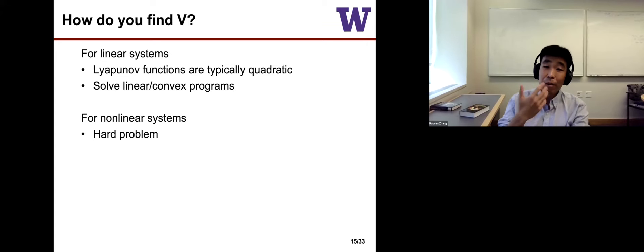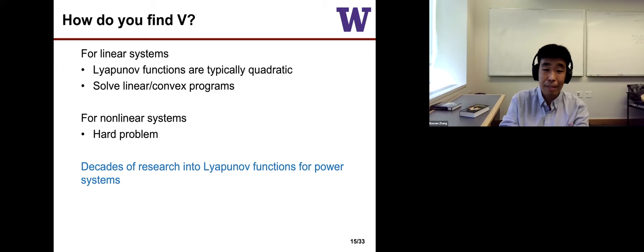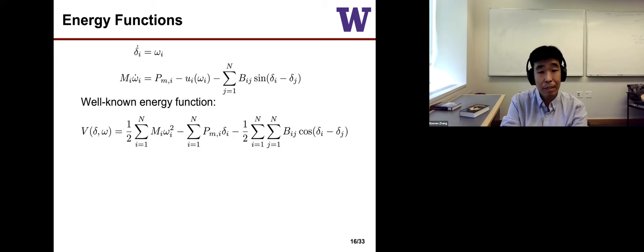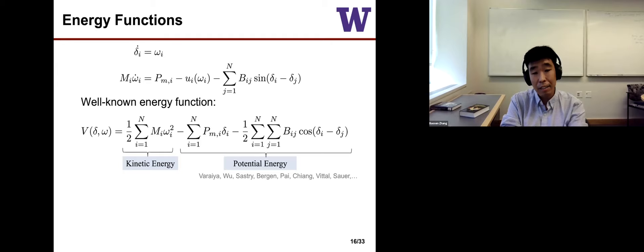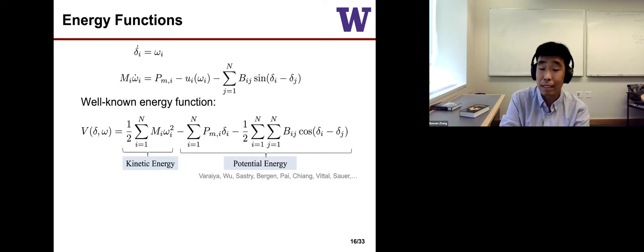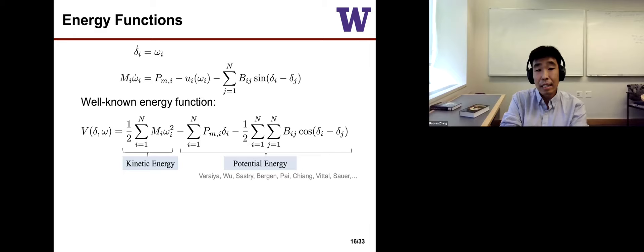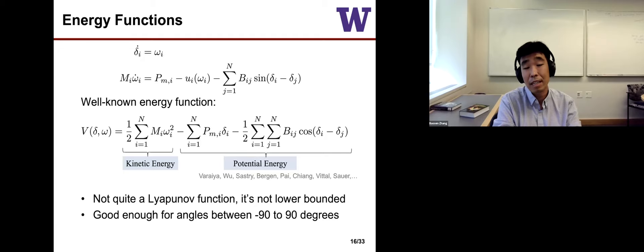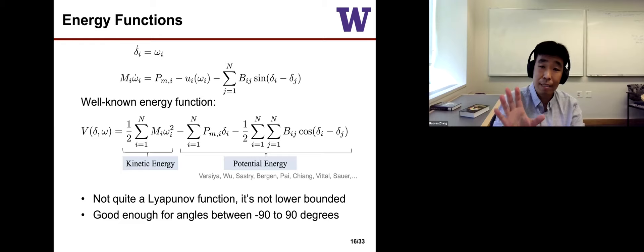Fortunately, we're not working with an arbitrary system. There are decades of research into Lyapunov functions for power systems. For the swing equations there is a well-known energy function composed of two parts: kinetic energy and potential energy. This function has been studied since the 1970s. It's not quite a strict Lyapunov function because it's unbounded below, but it is good enough when we restrict angles to between minus 90 and 90 degrees, so for our purposes we treat it as a Lyapunov function.